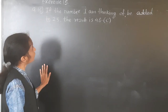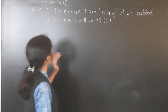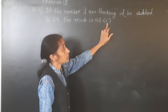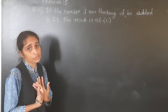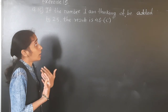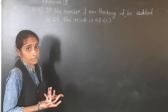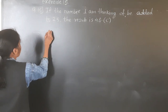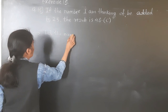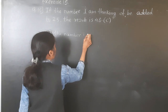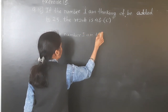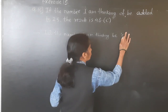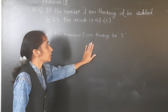If the number I am thinking of be added to 25, the result is 48. The variable given is C. The number I am thinking — which I don't know — I consider C. So let the number I am thinking be C.